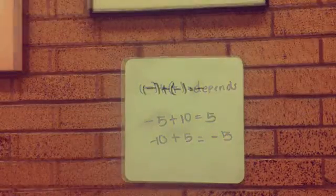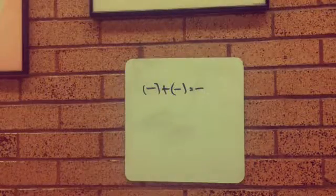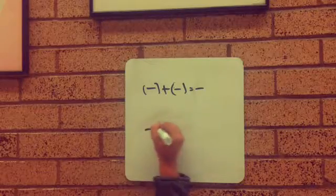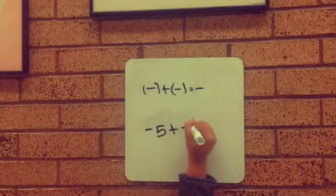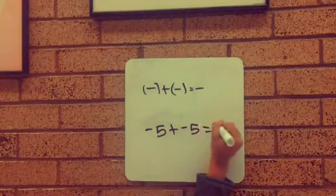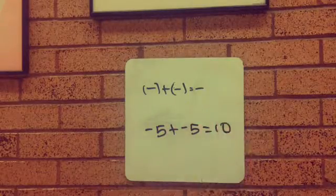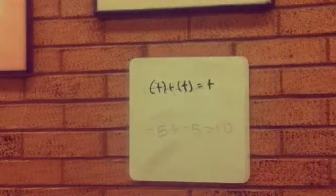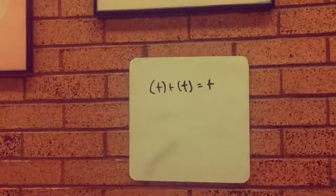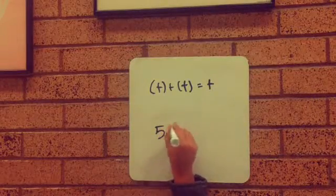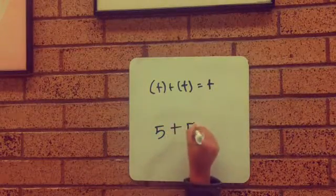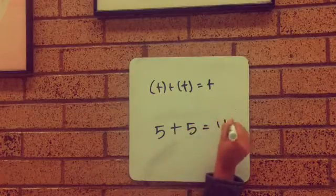A negative plus a negative equals a negative. So negative 5 plus negative 5 equals negative 10. A positive plus a positive makes a positive, so like 5 plus 5 equals 10.